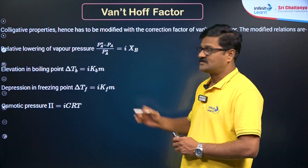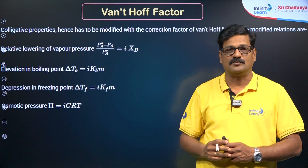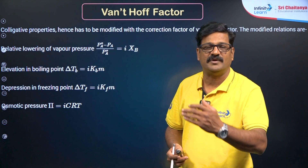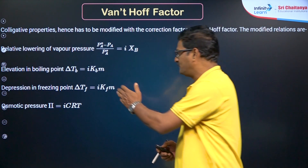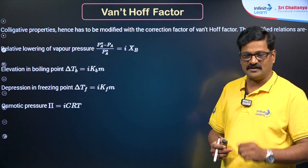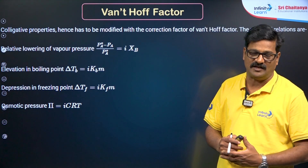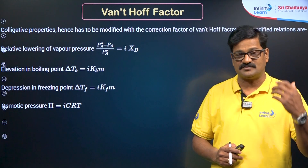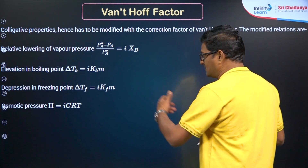You can correct colligative properties using the Van't Hoff factor as follows: Relative lowering of vapour pressure: (P°A − PS) / P°A = i × mole fraction of solute. Elevation in boiling point: ΔTb = i × Kb × molality, where Kb is the ebullioscopic constant. Depression in freezing point: ΔTf = i × Kf × molality, where Kf is the cryoscopic constant. Osmotic pressure: π = i × C × R × T, where C is molarity, R = 0.0821, and T is the given temperature.